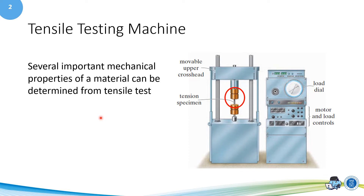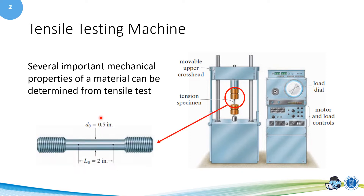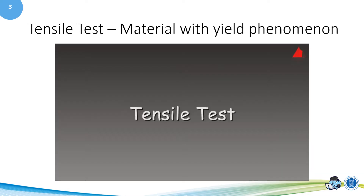Let's see the detail of the specimen. The specimen of the tensile test is like this. You can see the original diameter and the original length of the specimen are known. So, we can calculate the original cross-sectional area. Next, we want to see the experiment of the tensile testing. I will show the video to you.